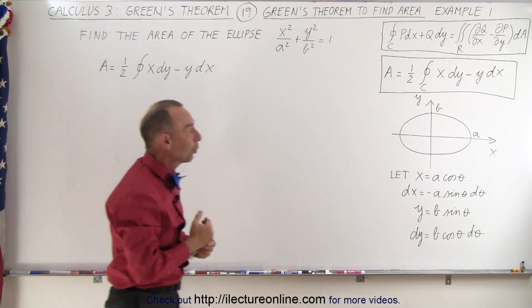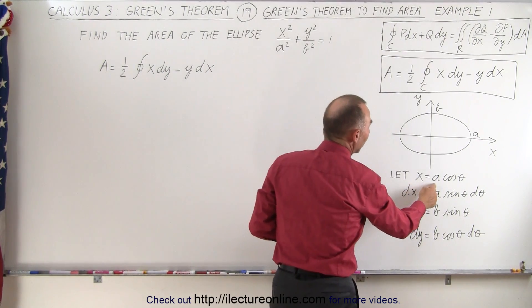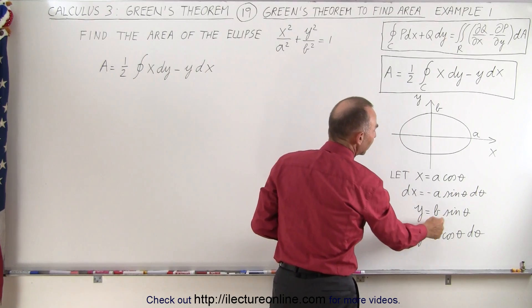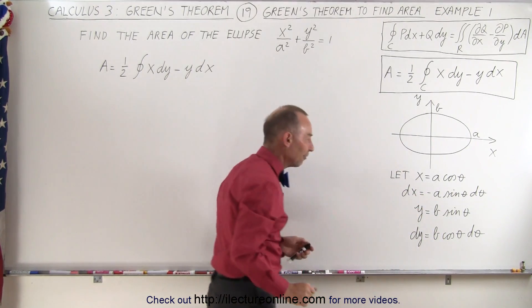And we can convert from Cartesian coordinates, x and y, to polar coordinates by letting x equals a times the cosine of theta and y equals b times the sine of theta, and their differentials.